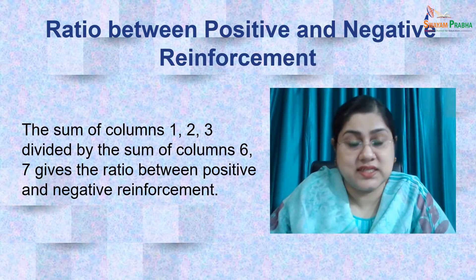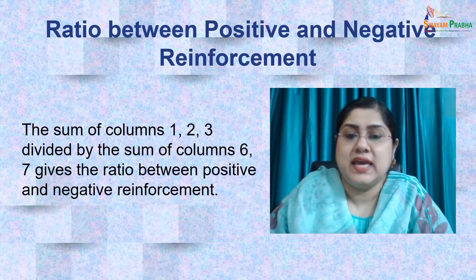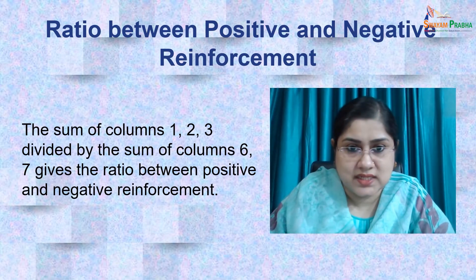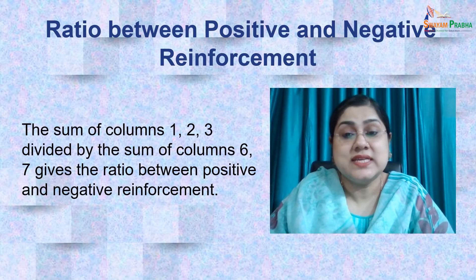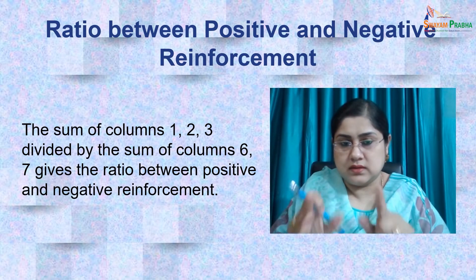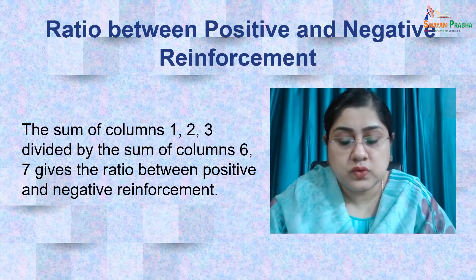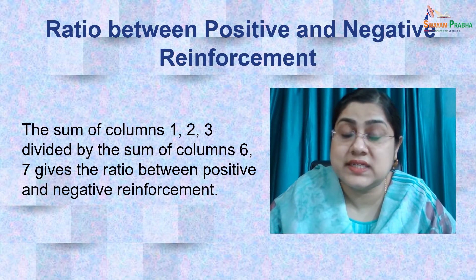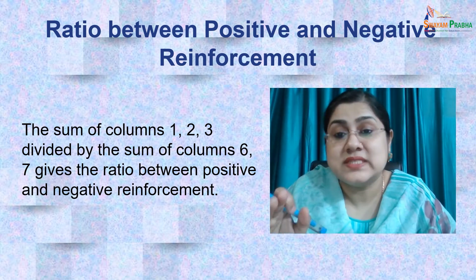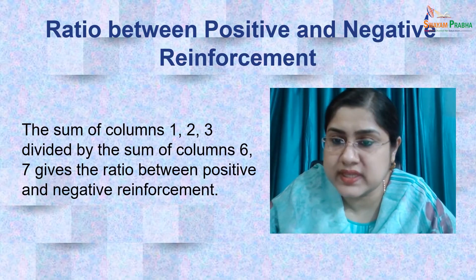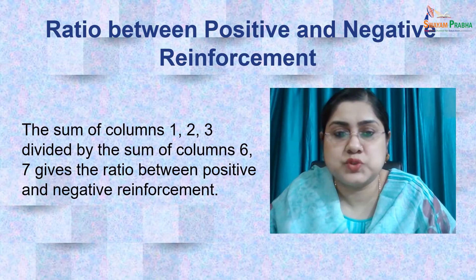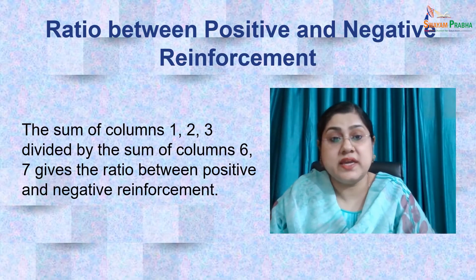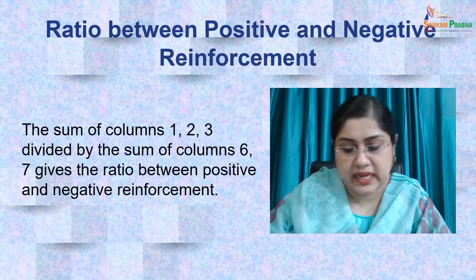The next interpretation is the ratio between positive reinforcement and negative reinforcement. The sum of columns 1, 2, and 3 is divided by the sum of columns 6 and 7. If this ratio is more than 1, the teacher is said to be a good teacher. This formula allows us to determine the ratio between positive reinforcement and negative reinforcement.